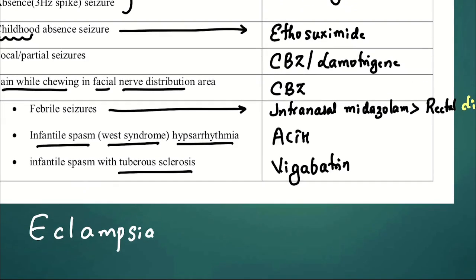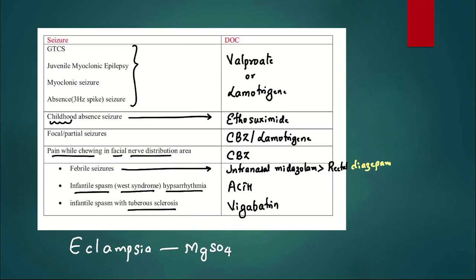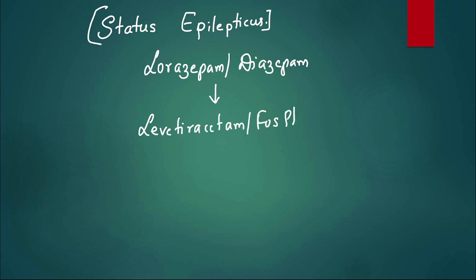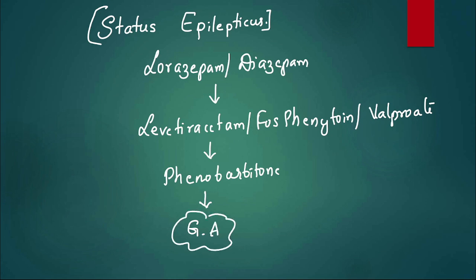Please pause the video and try to learn the drug of choices. Coming to status epilepticus, what we start in the beginning as the drug of choice is either lorazepam or diazepam. Even after giving this, if the seizures are not controlled, then we go for levetiracetam, fosphenytoin, or valproate. Still not controlled, any of these three, then go for phenobarbital. Still not controlled, the last resort will be general anesthesia, either by midazolam or propofol. This is how we manage status epilepticus, but the drug of choice will be lorazepam - initial drug of choice.